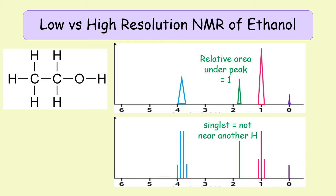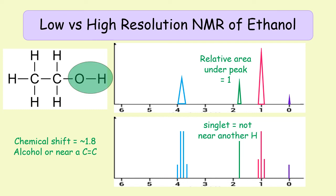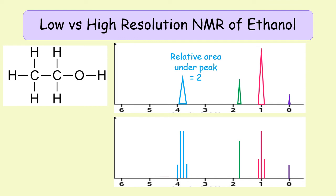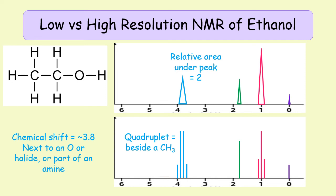Looking at the next signal: the relative area under the peak is one, and it is a singlet, meaning it has no neighboring hydrogens. Its chemical shift of around 1.8 indicates either an alcohol group or a proton near a carbon-carbon double bond. Since we know the molecule is ethanol, this must be our OH group. Finally, the last signal has a relative area of two, suggesting a CH2 group. In high resolution it's a quadruplet — by the N+1 rule that means it has three neighbors. Its chemical shift of around 3.8 tells us it's a carbon next to an oxygen, confirming this is our CH2 group.